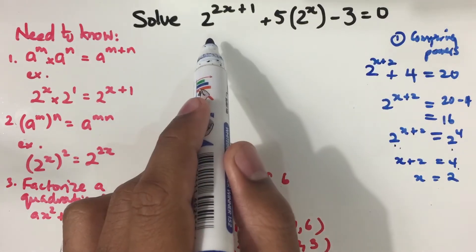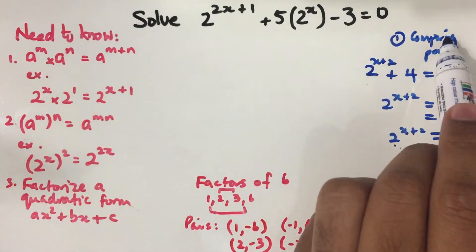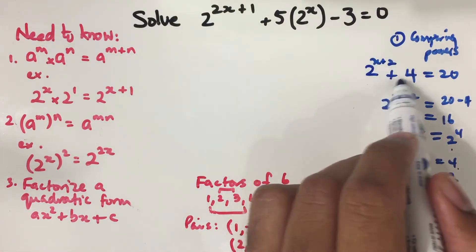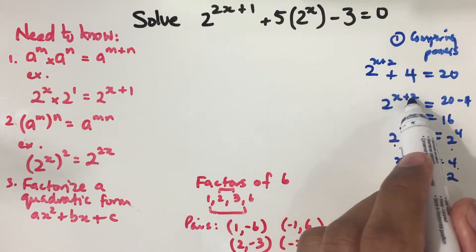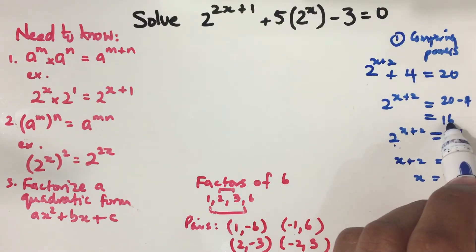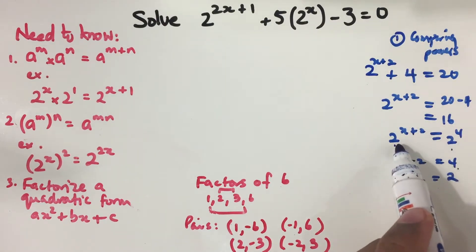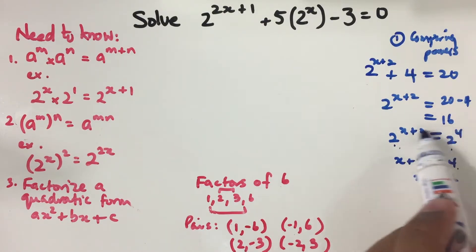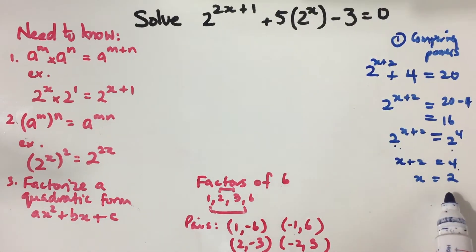This is an indices problem and CSEC AdMaths likes to bring two different types of problems. The first type is to compare powers. For example, suppose I have 2 to the power of x plus 2 plus 4 is equal to 20. Carrying the 4 across gives 2 to the power of x plus 2 is equal to 16. Since 16 is 2 to the power of 4, we compare powers: x plus 2 equals 4, so x equals 2.